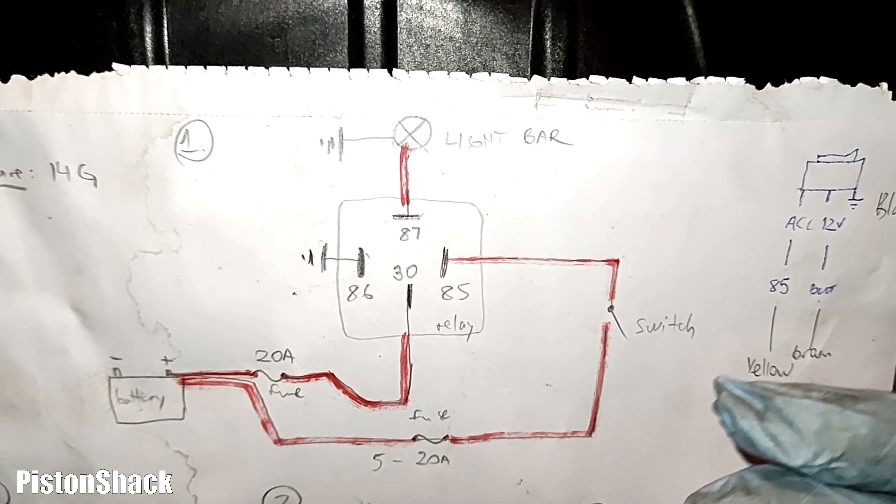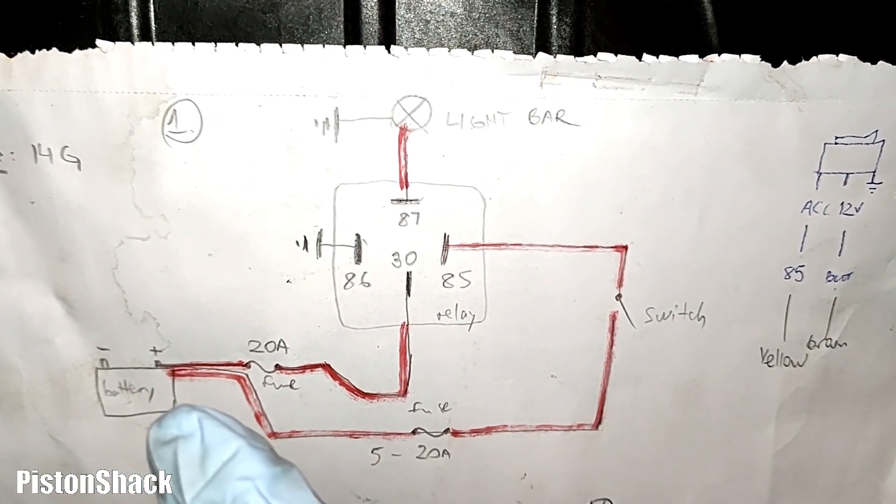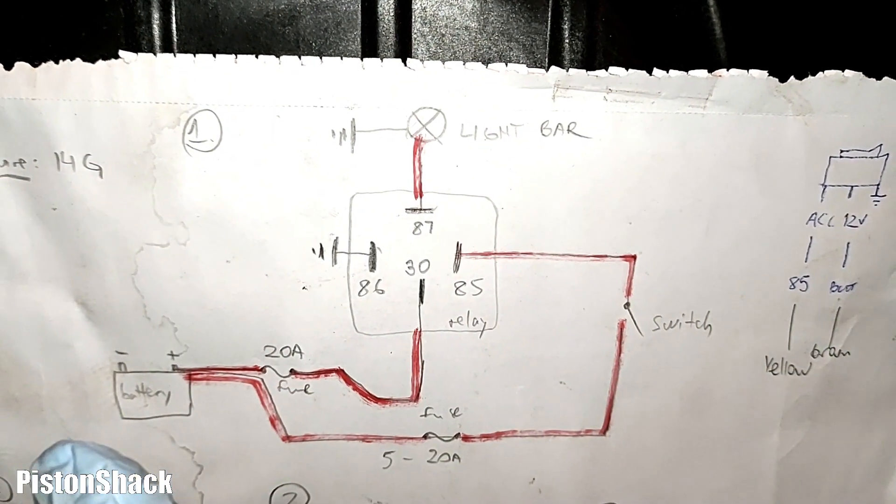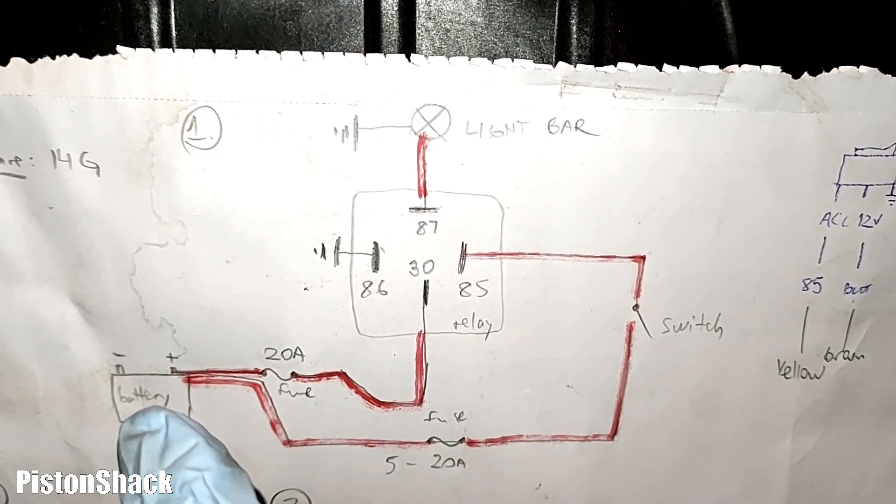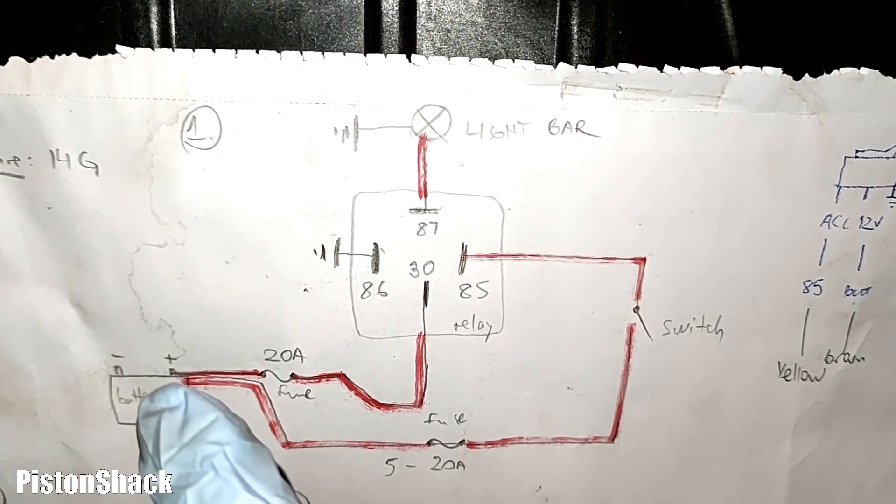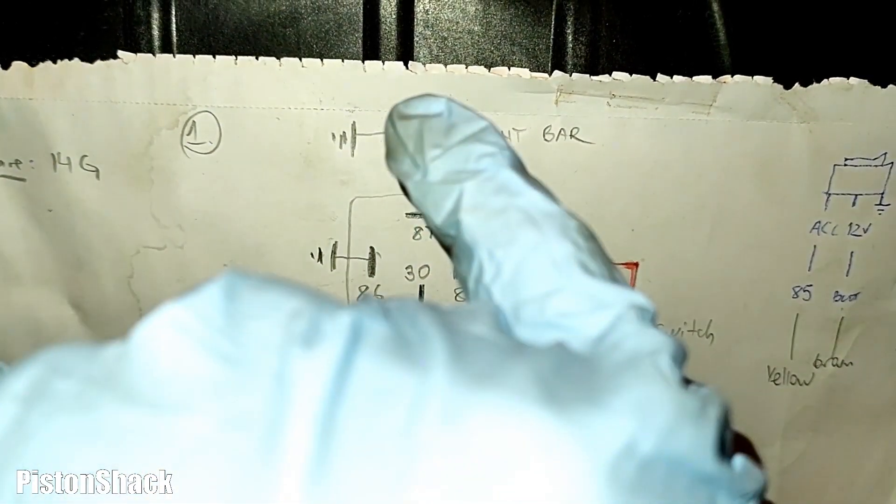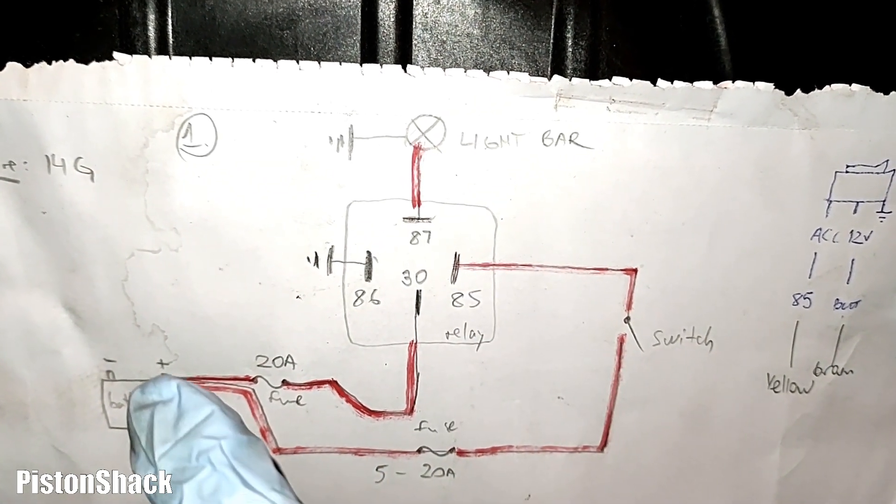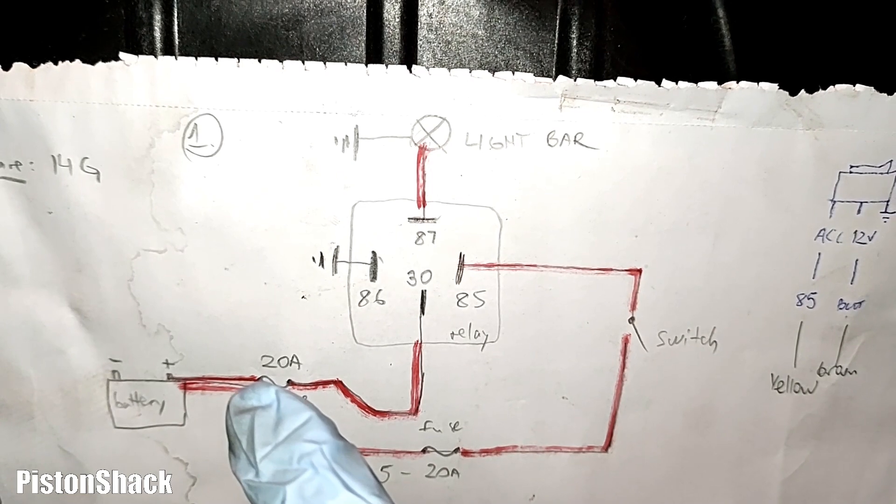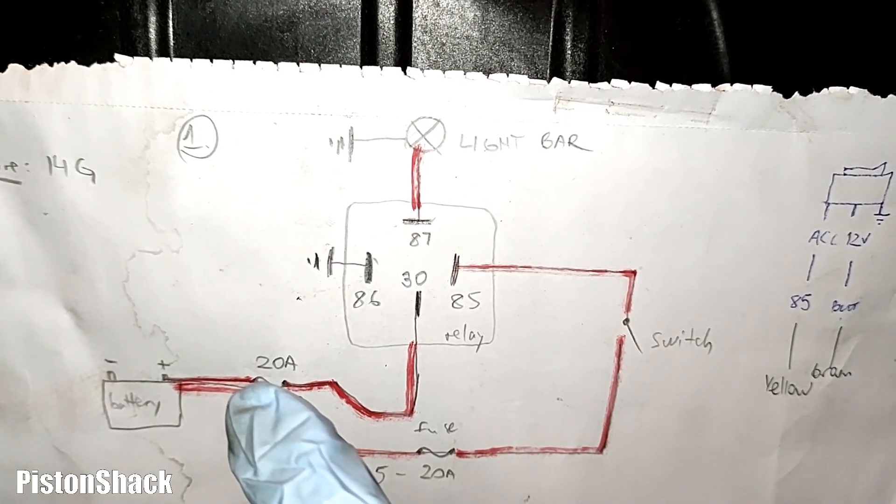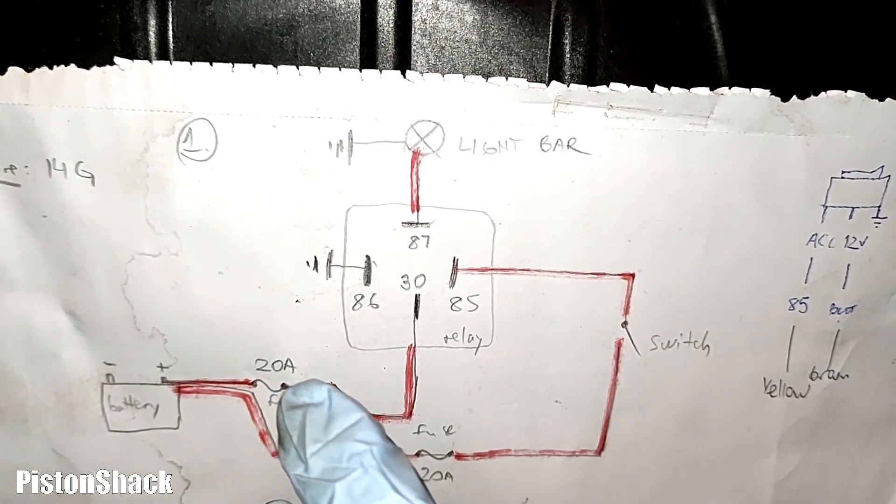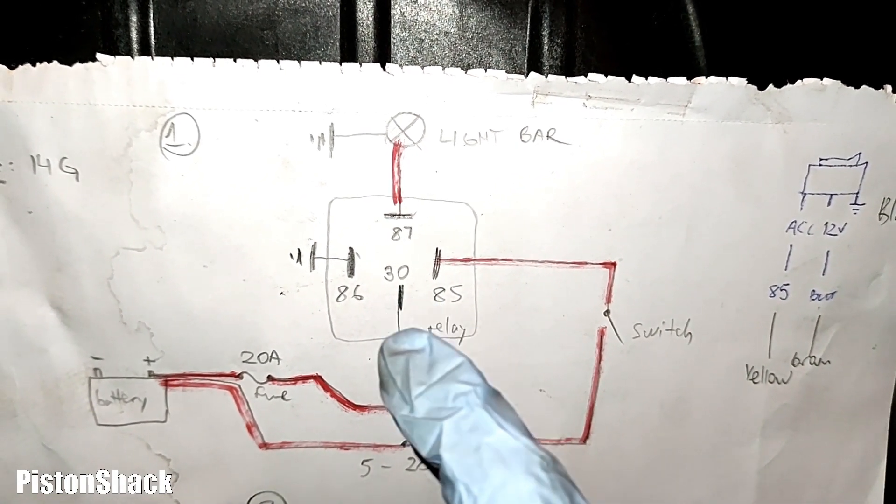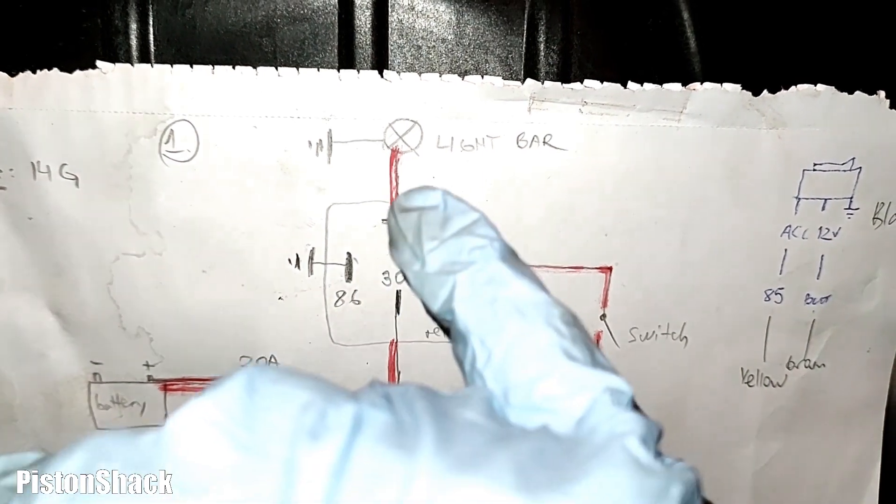The DC current circuit and electricity flows from positive back to the negative. Here's the battery, and as you can see, we have a load side of the relay and a control. From the positive battery terminal, wire is coming to the 20 amp fuse, then it's going to pin number 30 of the relay, which is the load side of the relay.